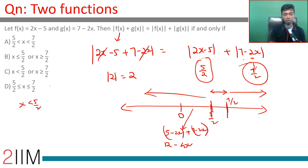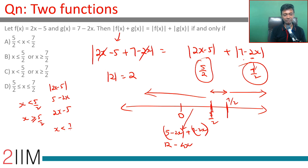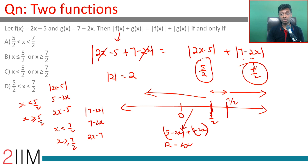To summarize: when x < 5/2, |2x - 5| = 5 - 2x; when x ≥ 5/2, |2x - 5| = 2x - 5. Likewise, when x < 7/2, |7 - 2x| = 7 - 2x; when x ≥ 7/2, |7 - 2x| = 2x - 7. This is how the function breaks across the intervals.